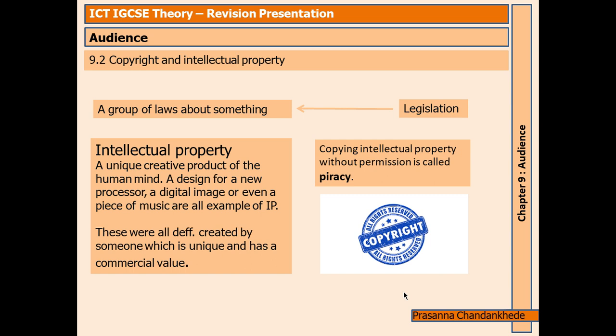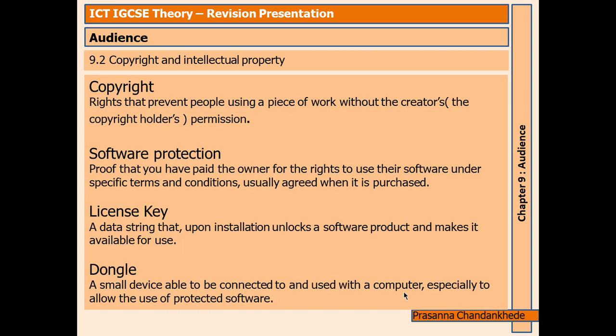Copying intellectual property without permission is called piracy. When you stream a film or video, part of the payment goes to the people who actually wrote the script or created the music and pictures. They are being paid for their IP so that they can make a living and create more. Without the payment, creation would stop.